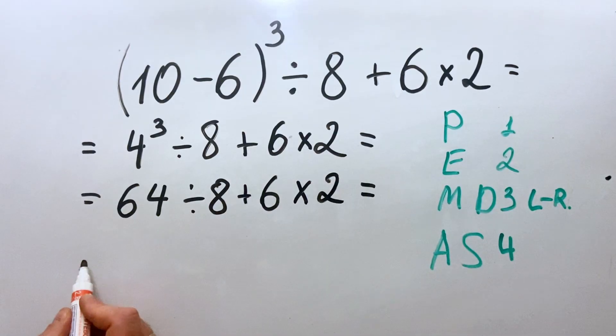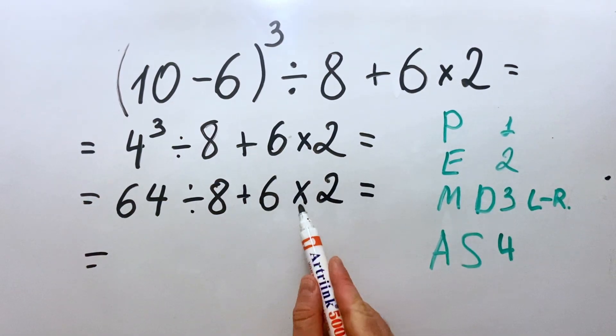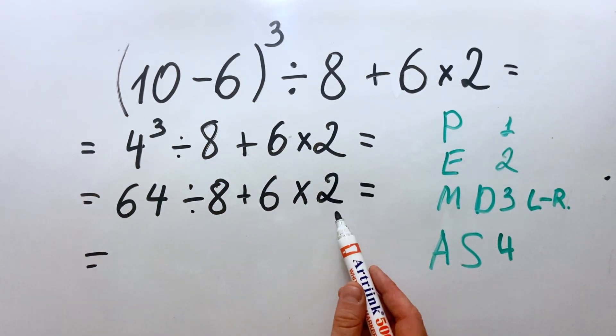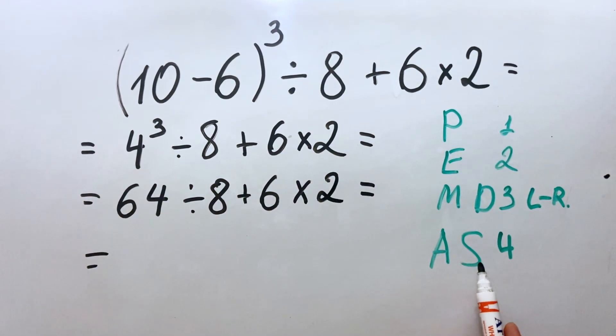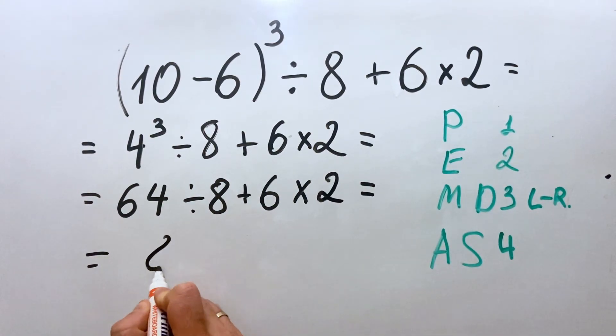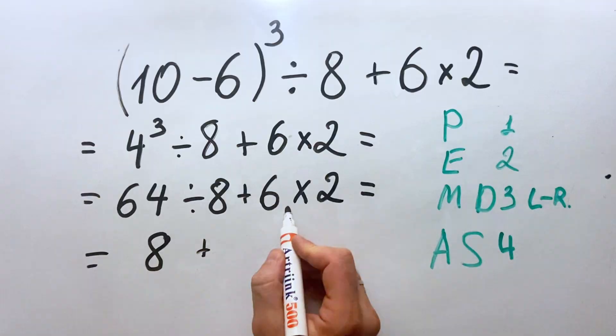So now what we see, we are left with division and multiplication, so we will do it in the third place. 64 divided by 8 is 8, plus 6 multiplied by 2 is 12.